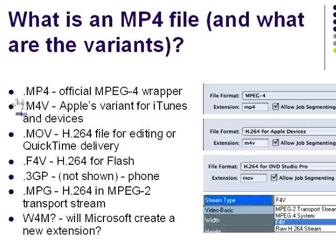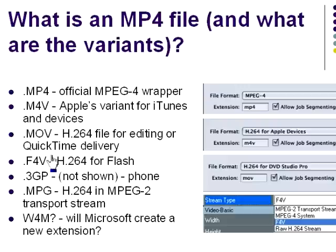H.264 is like a present that comes in many wrappers, or file formats. MP4 is the official H.264 format, while M4V is Apple's variant for iTunes. MOV files are produced for QuickTime playback, F4V for Flash, and so on. The key point is that irrespective of the wrapper, the encoding options will be the same — everything we discuss going forward applies equally whether you're producing H.264 for Flash, QuickTime, or some other playback medium.